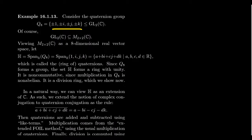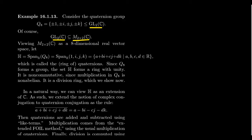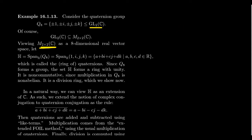We can identify these eight elements with matrices in the general linear group of 2×2 complex matrices. The general linear group of 2×2 complex matrices is a subset of the ring of 2×2 complex matrices. This ring is also a vector space — as a complex vector space of 2×2 matrices, we get a four-dimensional complex vector space. But since every complex number z can be written as a + bi where a and b are real, the 2×2 complex matrix ring forms an eight-dimensional real vector space.